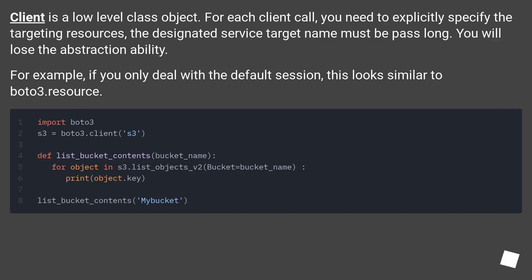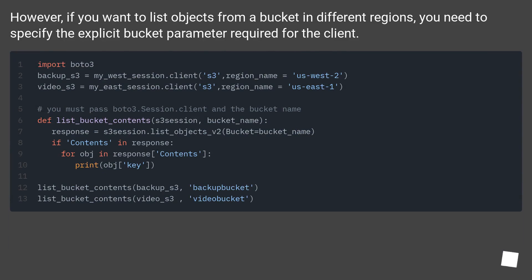Client is a low-level class object. For each client call, you need to explicitly specify the targeting resources — the designated service target name must be passed along. You will lose the abstraction ability. For example, if you only deal with the default session, this looks similar to boto3.resource. However, if you want to list objects from a bucket in different regions, you need to specify the explicit bucket parameter required for the client.